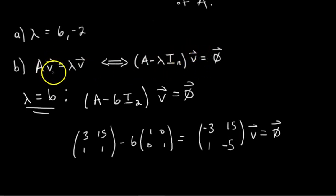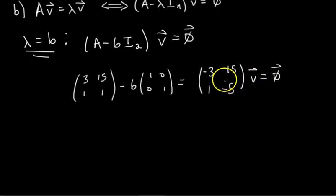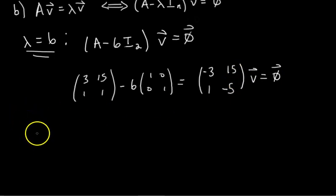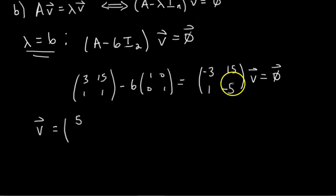These V's are the same eigenvectors — watch the first video in this miniseries if you're fuzzy on why. So we have A minus 6I₂ times V equals 0, and we just need to find a V. By inspection, we need a vector in ℝ² that when multiplied by this matrix gives [0, 0]. We need some linear combination of the columns: it looks like the second column is negative one-fifth of the first, so 5 times the first column plus 1 times the second column gives [0, 0].